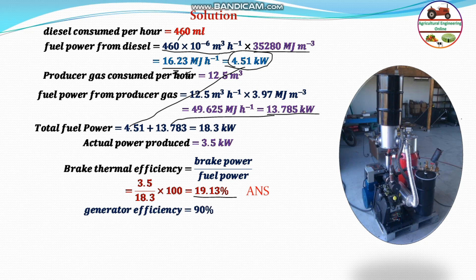Coming to the second part, generator efficiency is given as 90 percent. Therefore, only 90 percent of the power from the engine will be converted to electrical power.